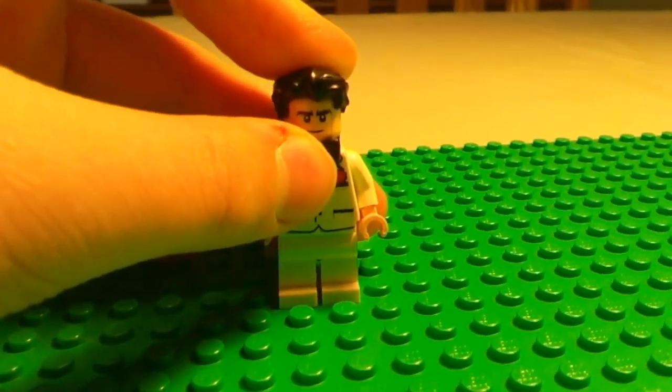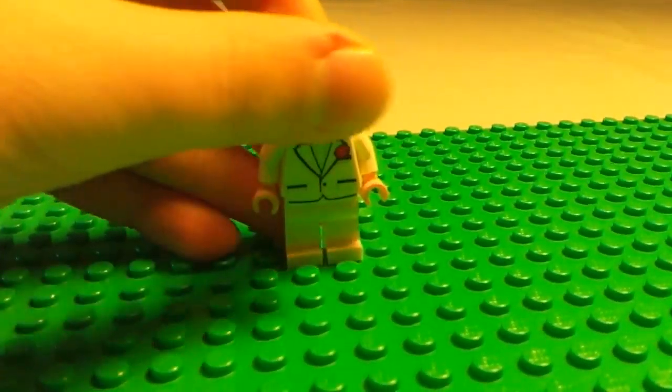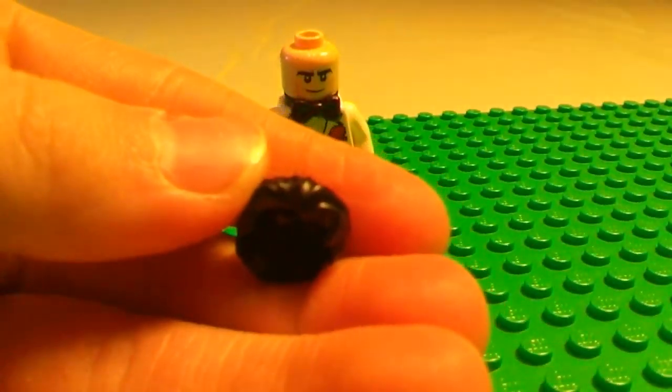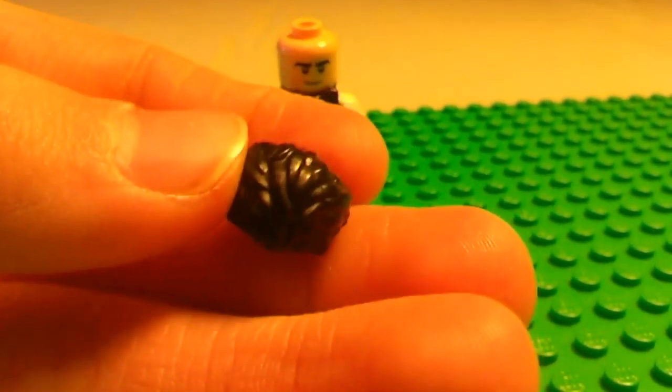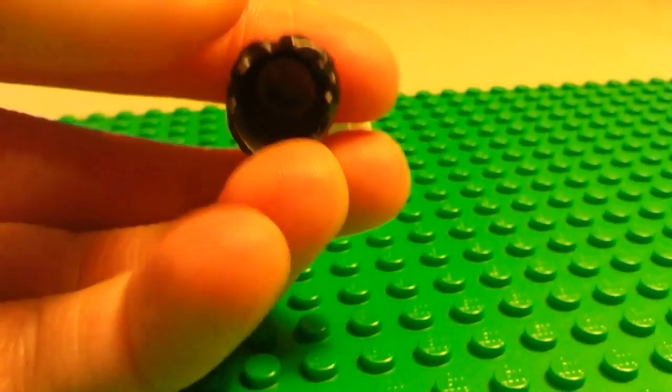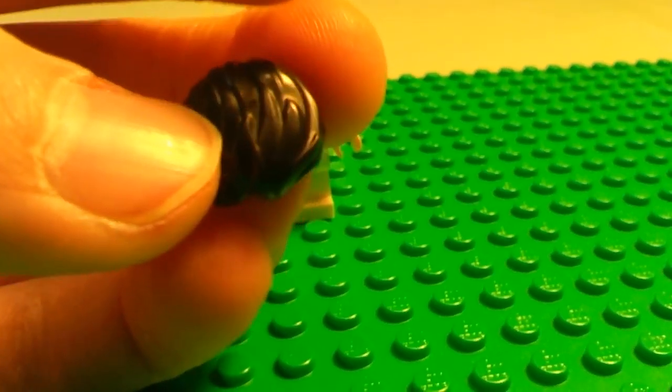Instead of white, it's black. He's got this new hairpiece mold. It looks kind of like the Batman versus Superman Superman hair, but it's a little bulkier and larger.